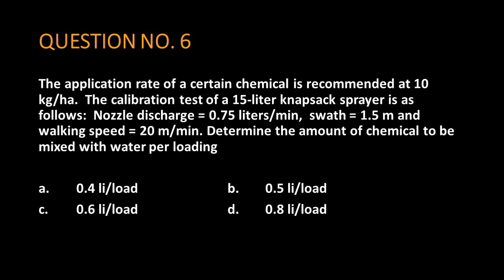Again, the application rate of a certain chemical is recommended at 10 kilograms per hectare. The calibration test of a 15-liter knapsack sprayer is as follows: Nozzle discharge is 0.75 liters per minute, swath is 1.5 meters, and walking speed is 20 meters per minute. Determine the amount of chemical to be mixed with water per loading.